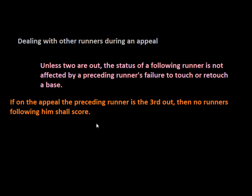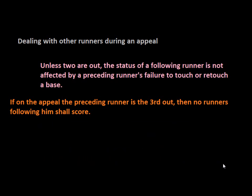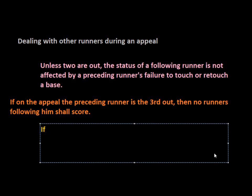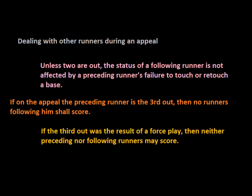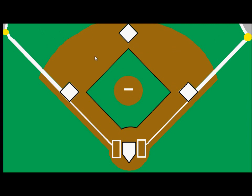It is basically just like the runner was put out at that base during the play and he would be the third out. It goes a step further and clarifies that if the appeal play was a force out, then the preceding runners are not permitted to score either. If the third out was the result of a force play, then neither preceding nor following runners may score. This reiterates the rule about the third out in the inning being a force out.